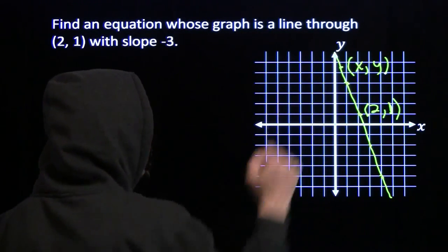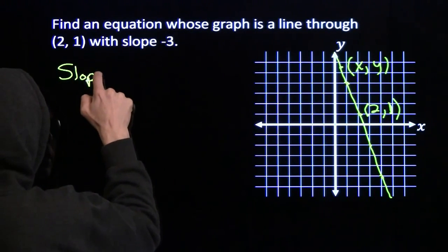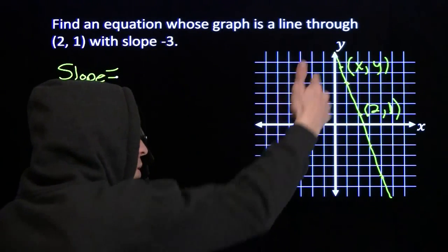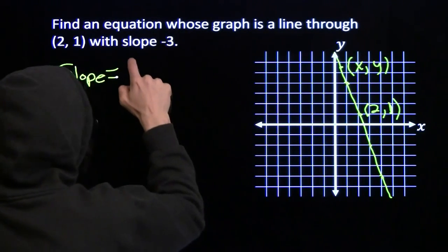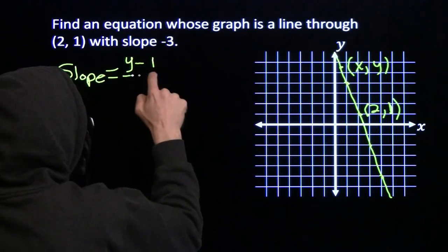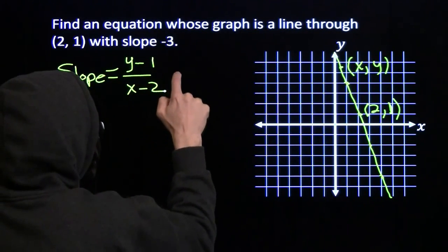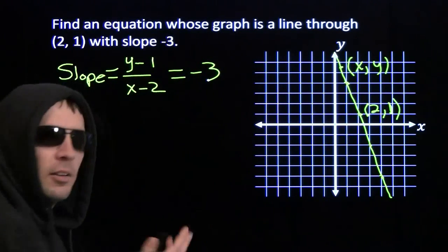There's one that we're given. And there's another one right there, (x,y). So the slope between (x,y) and (2,1) has to be -3. And we know how to find the slope between these two points. You take the difference in the y-coordinates and you divide by the difference in the x-coordinates. And that gives you the slope. And we know that has to be equal to -3.